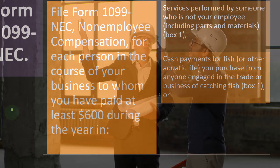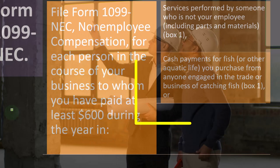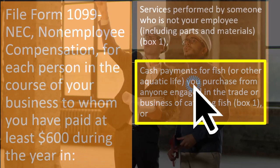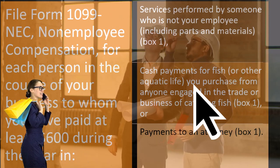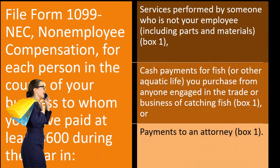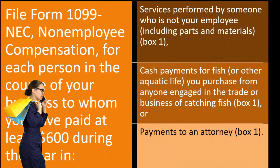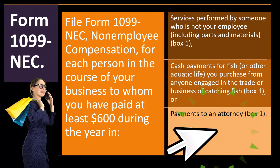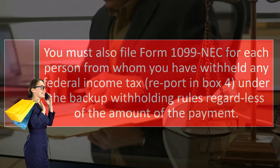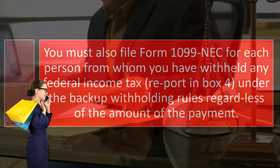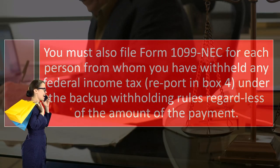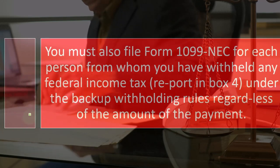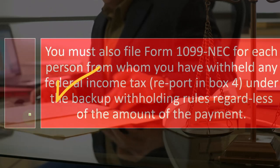Also file Form 1099-NEC for cash payments for fish or other aquatic life purchased from anyone engaged in the trade or business of catching fish — there are special rules for fishermen. Also for payments to an attorney. You must also file Form 1099-NEC for each person from whom you have withheld any federal income tax reported in box four under the backup withholding rules, regardless of the amount of the payment.